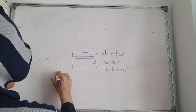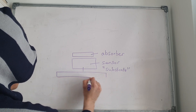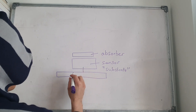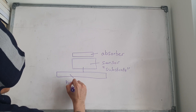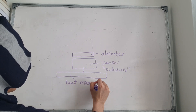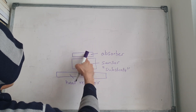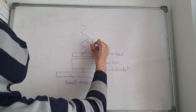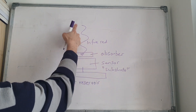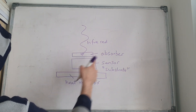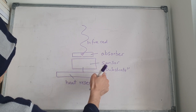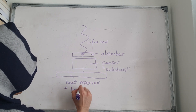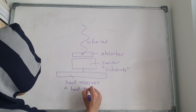The substrate is also connected to a heat reservoir. A heat reservoir is a heat source that has a large heat capacity. So here we have the heat reservoir, the absorber, and the infrared light coming in, hitting the absorber, which is connected to the sensor or substrate, and that is connected to the heat reservoir.